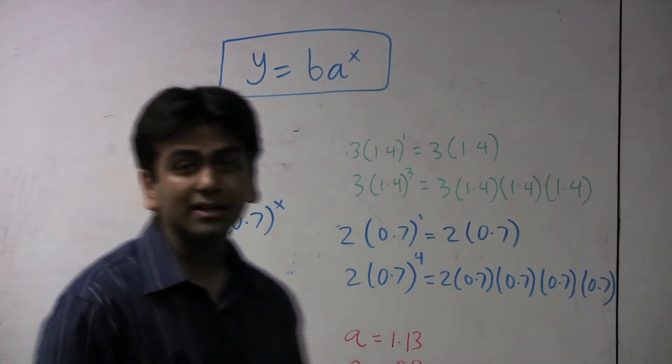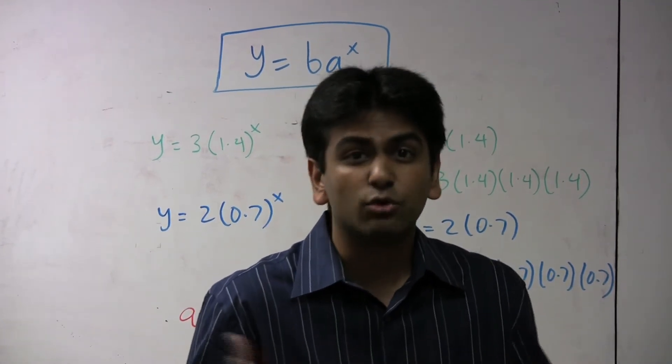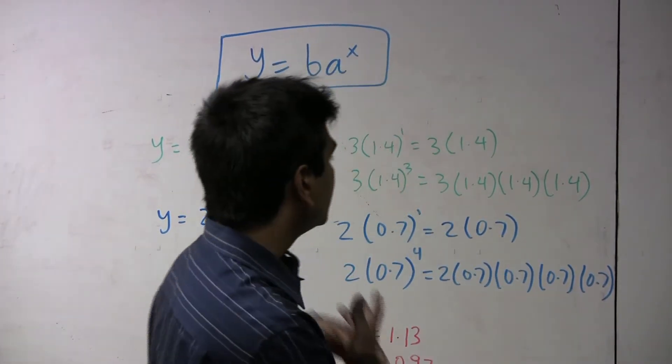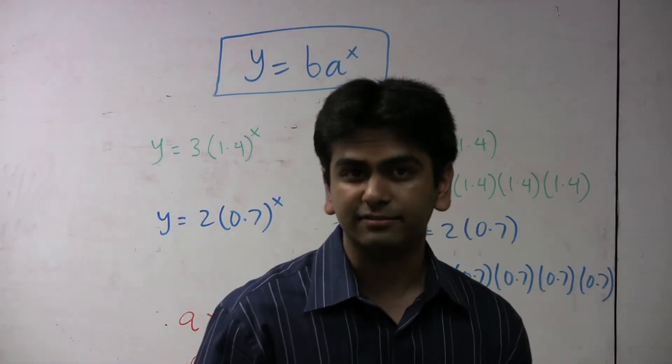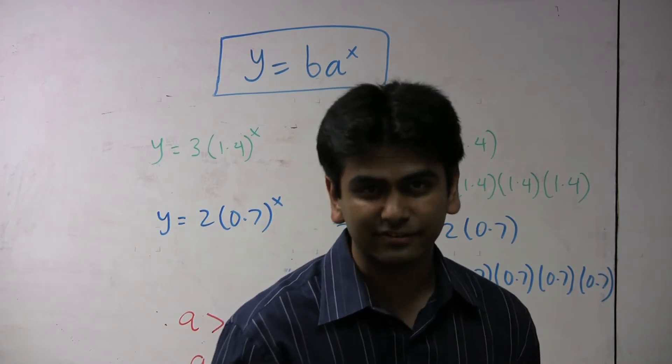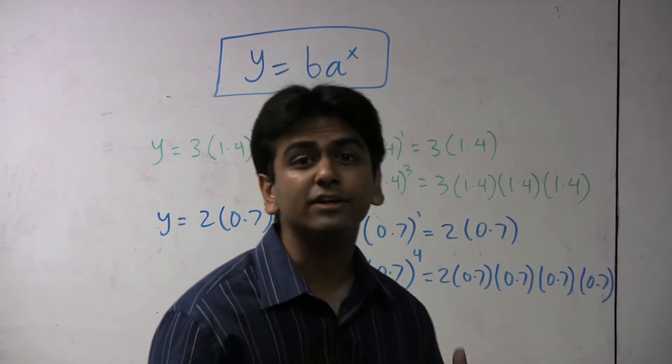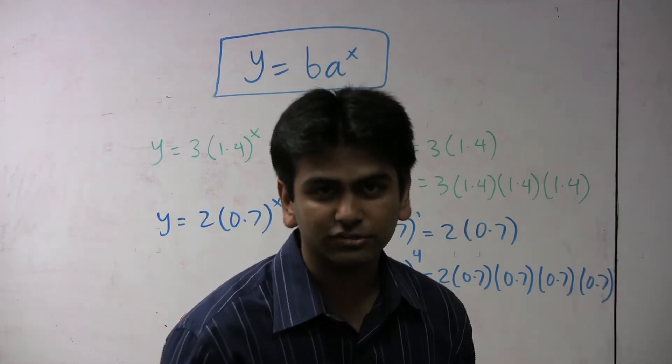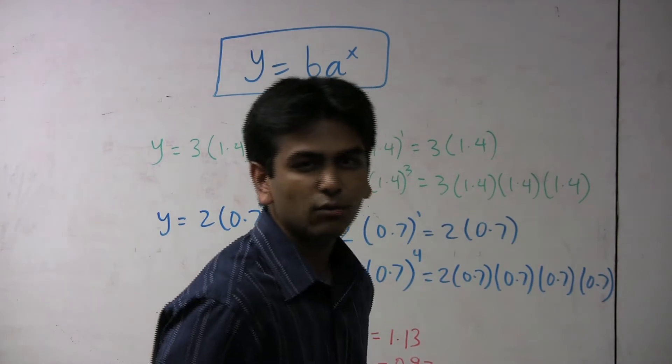But what is a? Well, a is sort of like the m in lines, meaning it's the rate. It's the rate at which the function is going up or going down. With slopes, however, if m is positive, the function goes up, and if m is negative, the function goes down. Here, it's a little different. Here if a is greater than one, then the function goes up, and if it's less than one, then the function goes down. Let's take a look at why this is true.